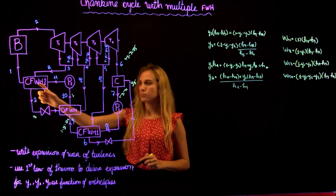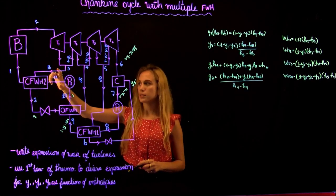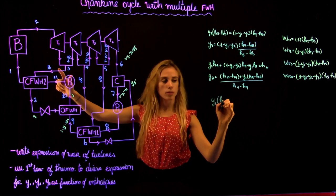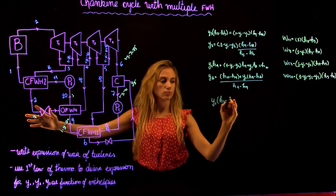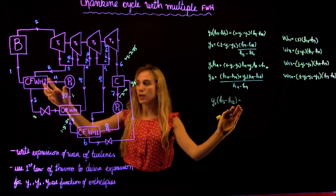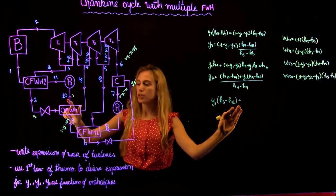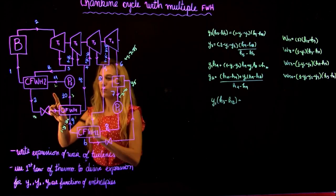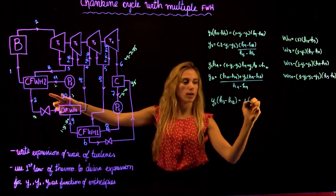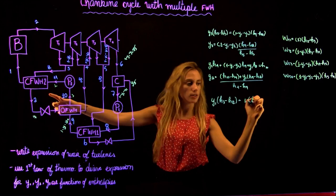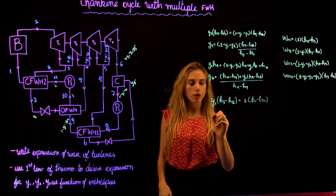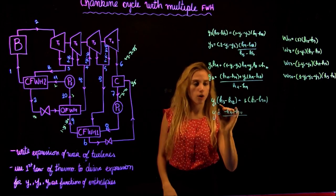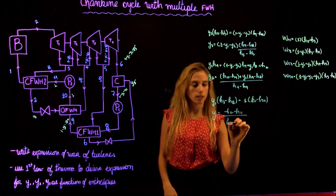For the last cross feed water heater, we repeat the same process. We have Y1 coming from state 3 going to A, and this energy is used to heat up the fluid from 11 to 1. We know that 100% goes through the pump and 100% leaves. So the energy equation gives 1 times (H1 minus H11), and solving for Y1: Y1 equals (H1 minus H11) over (H3 minus HA).